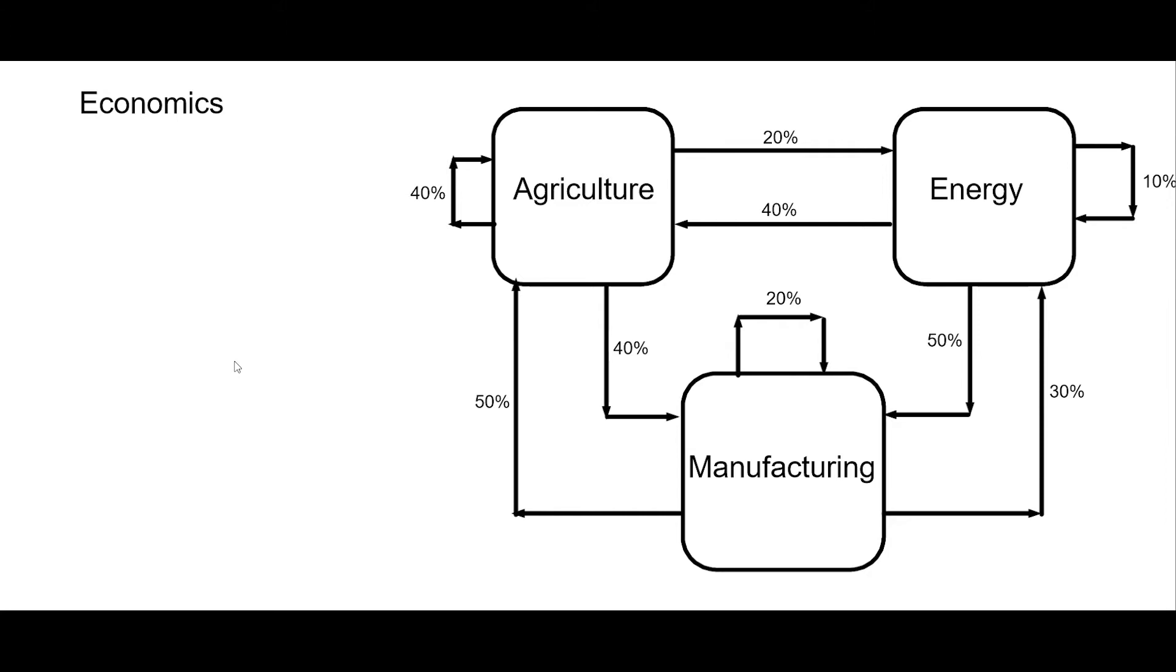And maybe they're connected in some way. So we have that agriculture is outputting 20 percent to energy, it's outputting 40 percent to manufacturing and it's keeping 40 percent. And then energy is outputting 40 to agriculture, 50 to manufacturing, it's keeping 10.